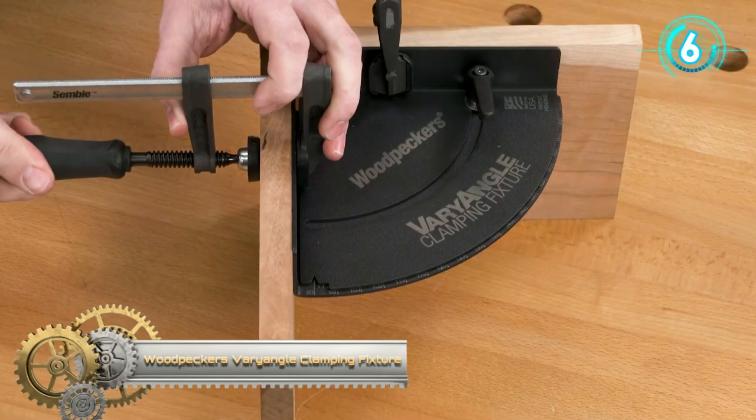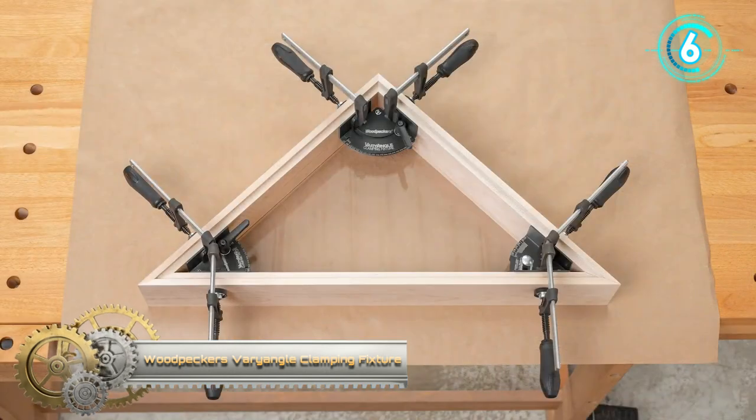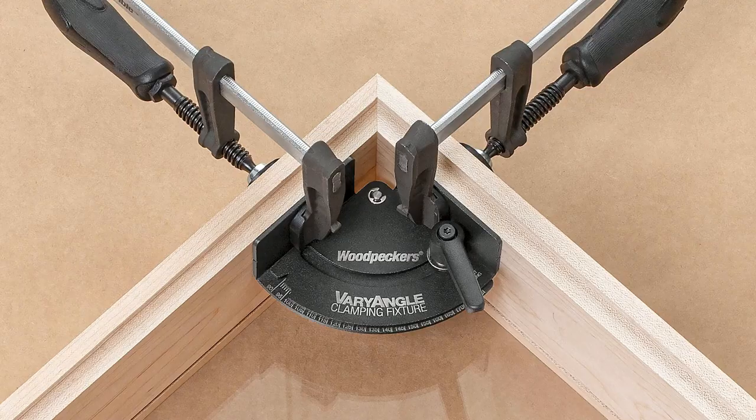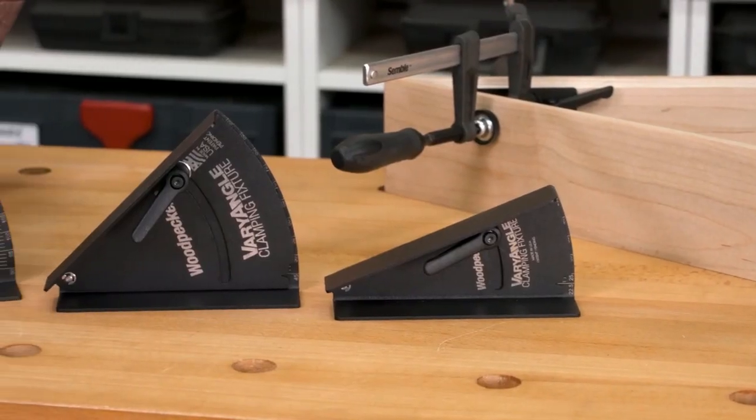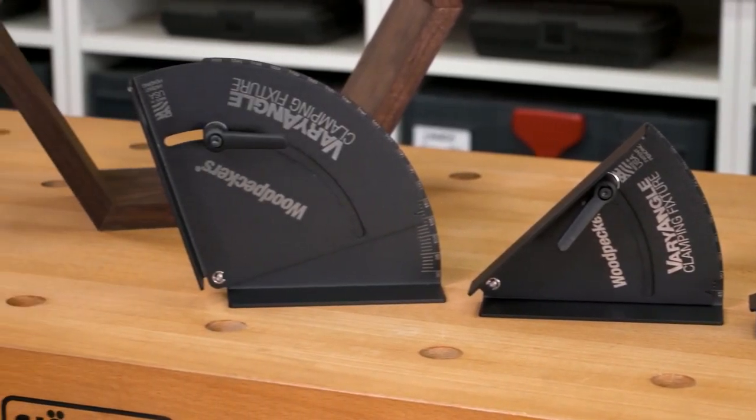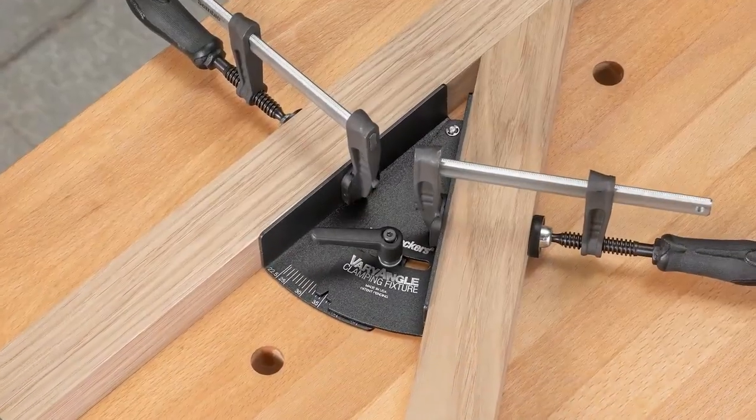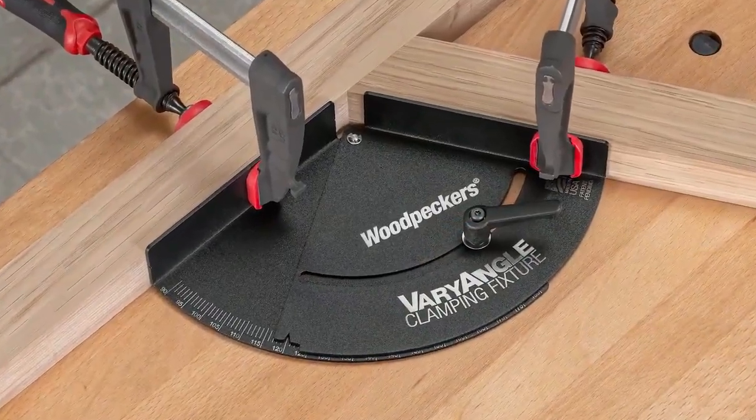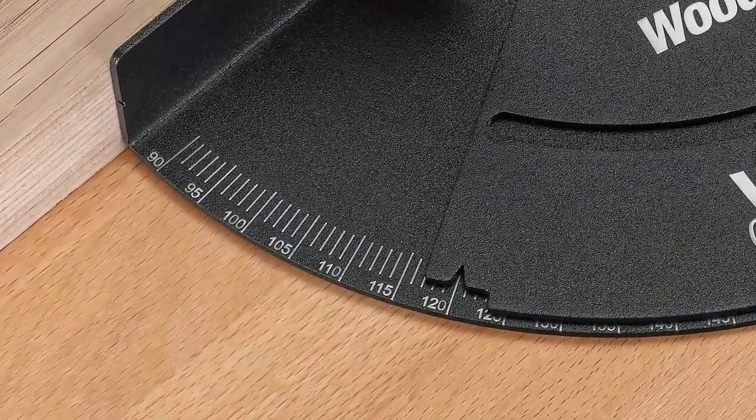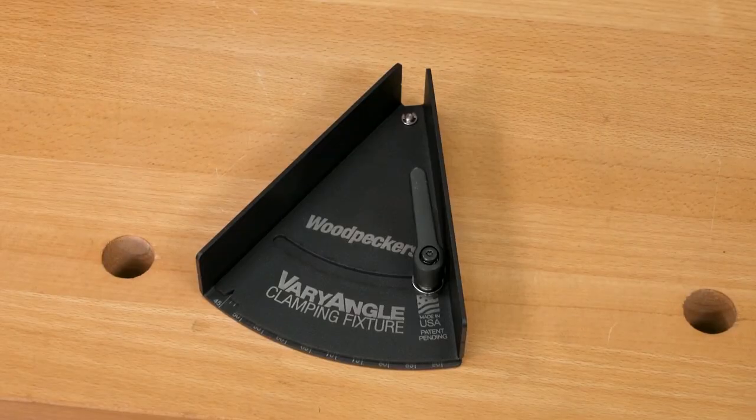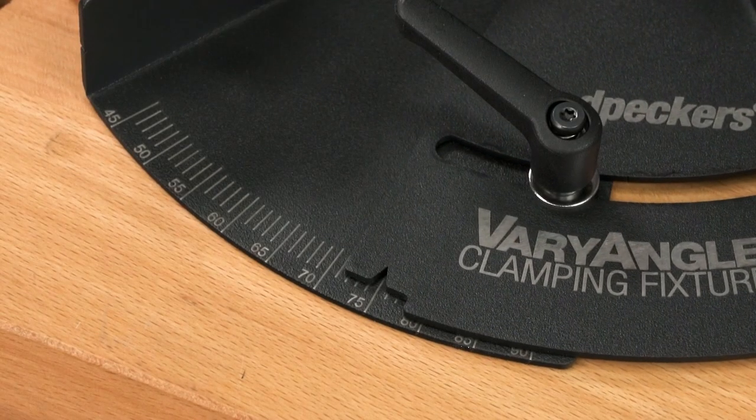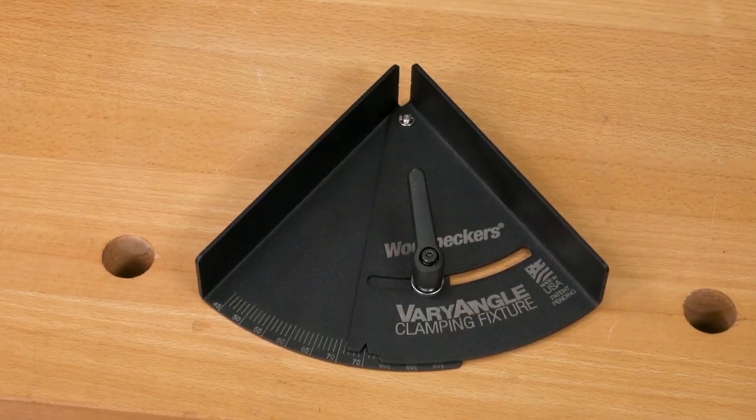Woodpecker's Variangle Clamping Fixture. Woodpecker's new Variangle Clamping Fixtures take the great features of their famous clamping squares and add the flexibility to clamp angles other than 90 degrees. They created three different angle ranges and two different sizes of the Variangle to give you a full clamping range from 22.5 degrees to 180 degrees. Now you can tackle any angle joinery project.